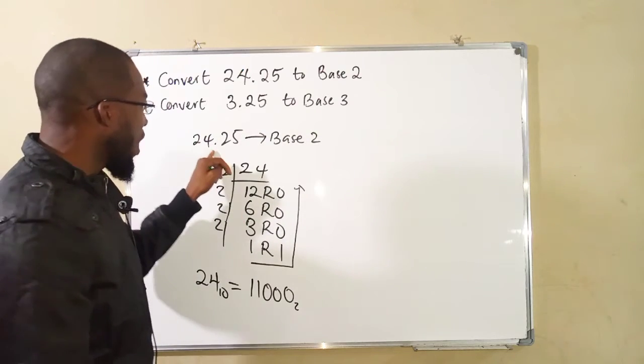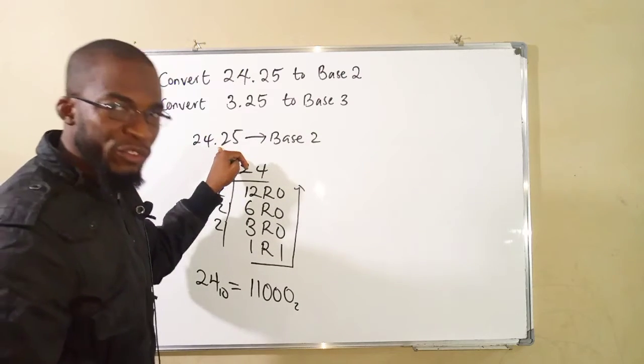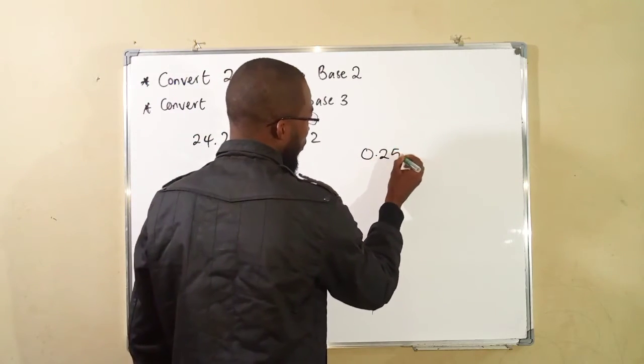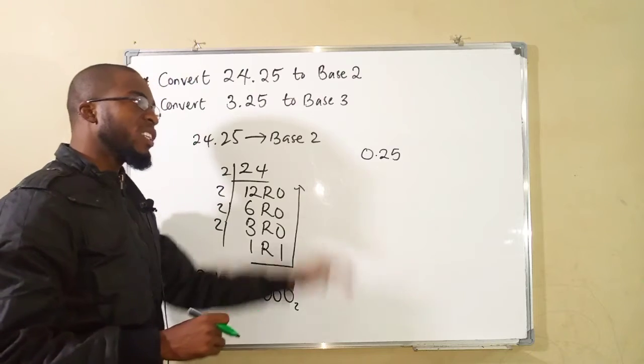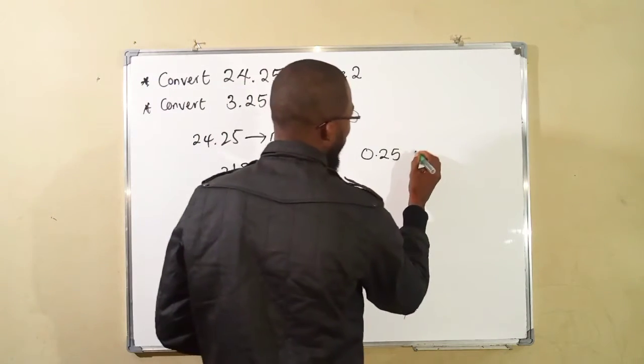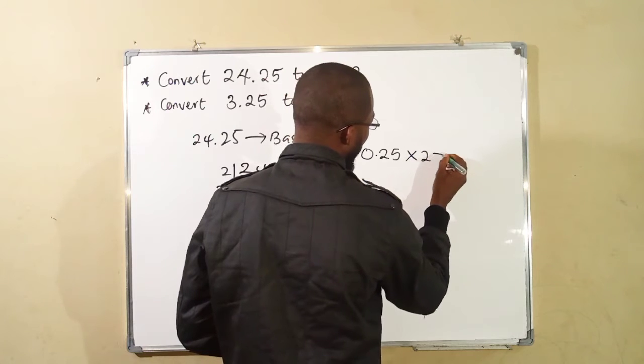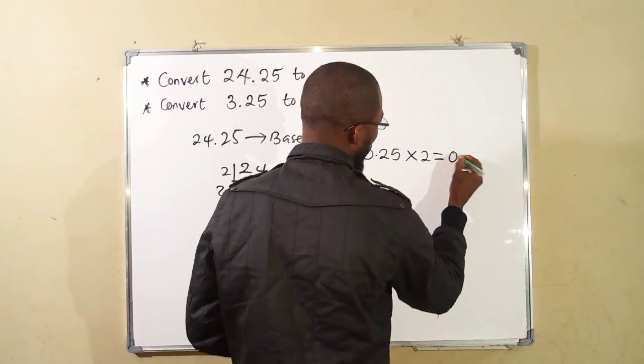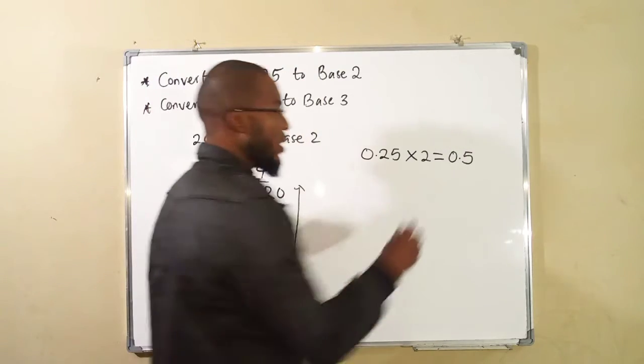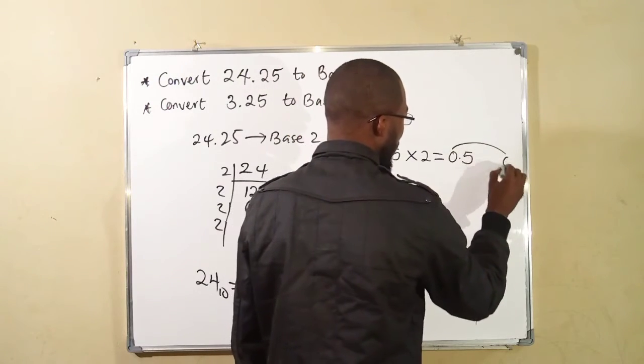But we have a decimal part, which is 0.25. To convert 0.25, we are going to multiply by 2 instead of dividing. So if you times this by 2, you shall obtain 0.5. Take away the whole number. The whole number is 0. You take it away.